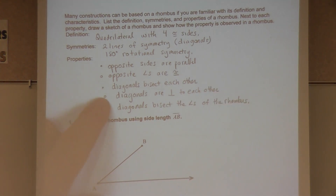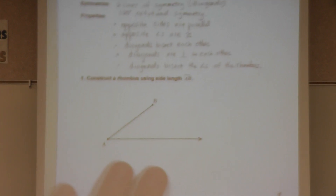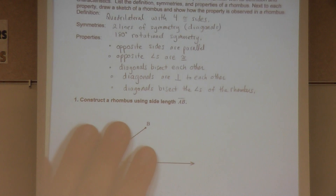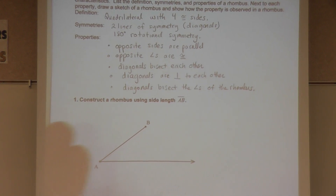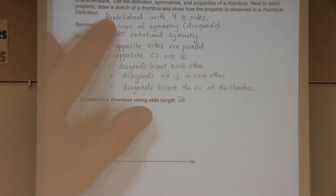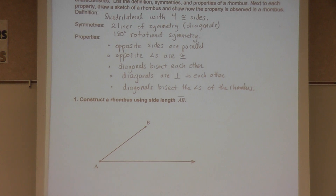We'll use these properties for other constructions. Now, if we're asked to construct a rhombus, we're going to go to the definition. So in this first construction, they're asking us to construct a rhombus. The way I'm going to do this is tie it to the definition — the definition of a rhombus is a quadrilateral with four equal sides.